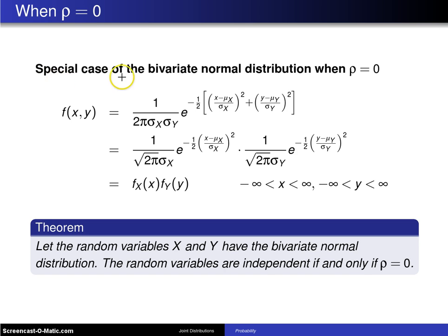There is a special case of the bivariate normal when rho equals 0. If you go back to the original definition of the bivariate normal distribution, f of xy reduces to 1 over 2 pi sigma x sigma y e to the minus 1 half. Here is the standardized x squared, the standardized y squared. All the rest of the terms drop out.